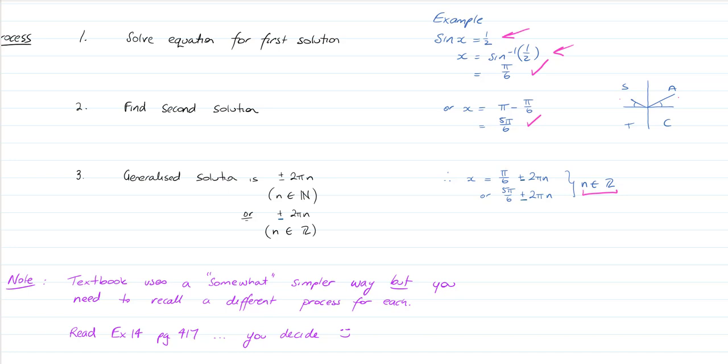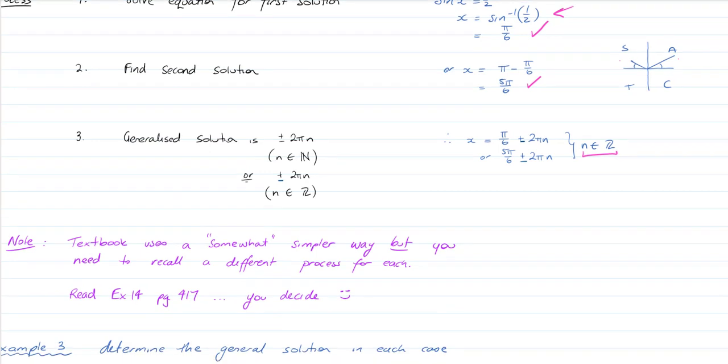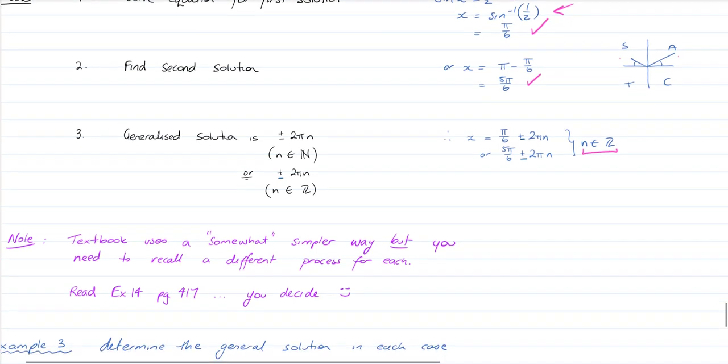Now, it's important to note that the textbook we use, and you might not be watching this video from my school, but the Cambridge textbook talks about a simpler way, which is a little bit simpler, but then you need to recall different processes for each different trig ratio: sin, cos, and tan. So I think it's probably simpler to remember one process, even if that process is a bit trickier.